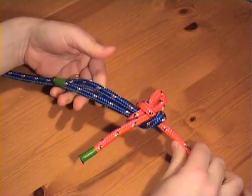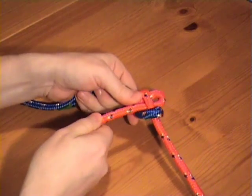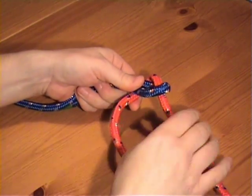So there's the slipped sheet bend. And as normal, it can be fairly quickly released by pulling on the loose end.